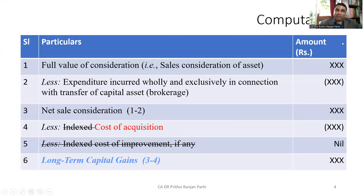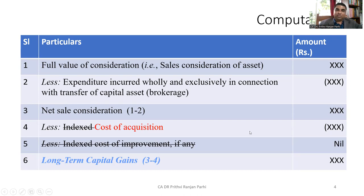Capital gain is calculated in the following manner. First we compute the full value of consideration, that is the sales consideration of the asset. From that we deduct the expenditure incurred wholly or exclusively in connection with the transfer of the capital asset — for instance, brokerage paid. After this deduction we get the net sales consideration. From that the cost of acquisition is to be deducted. There will be no indexation, no cost of improvement, and after this deduction we get the long-term capital gain.